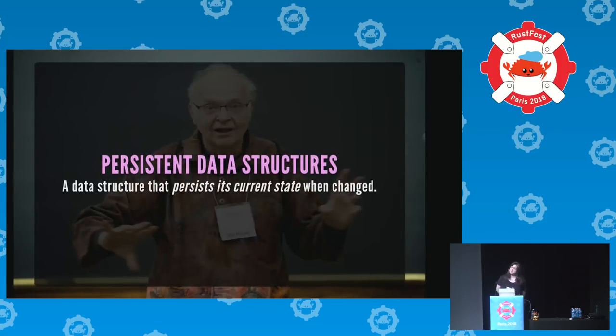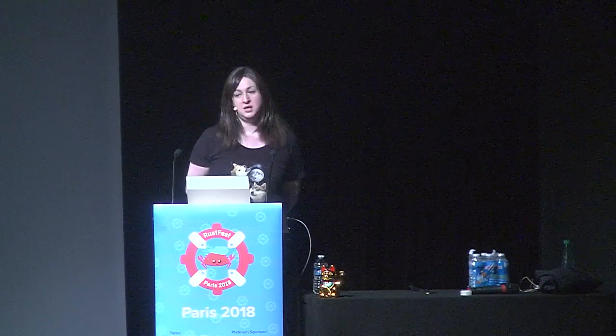Then there's persistent data structures — the technical term for something that isn't mutable. A data structure that persists its current state when changed basically means if you change it, you don't really change it; you just get a new value back. It's like two plus two: you don't change the number two by adding two to it, you get the number four back.